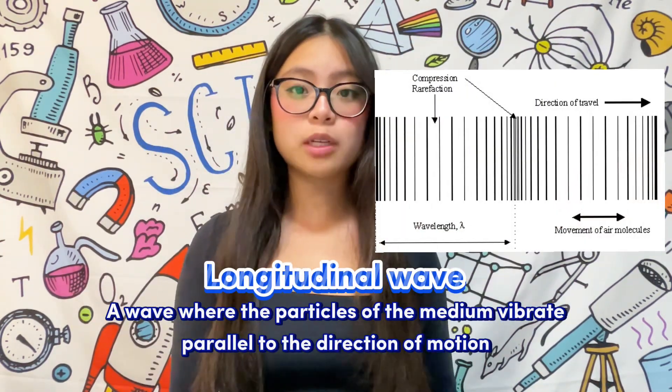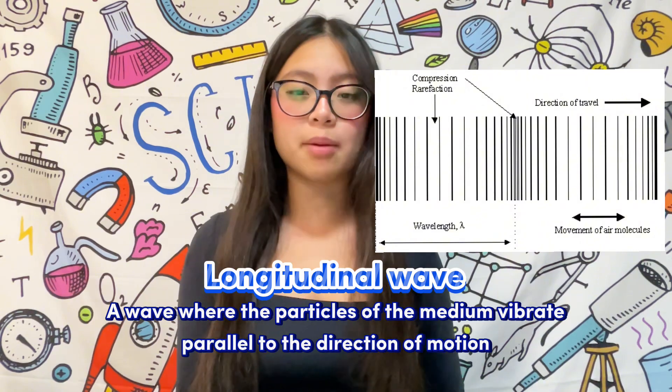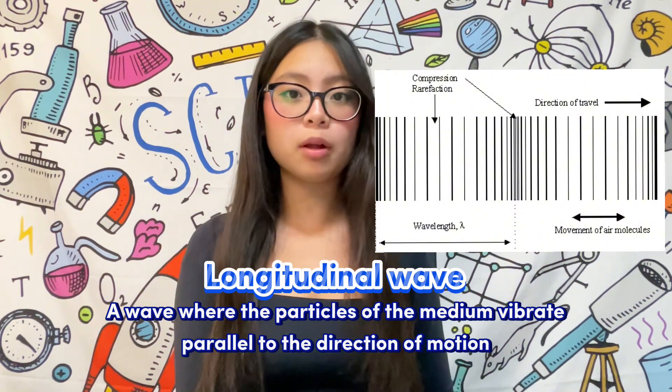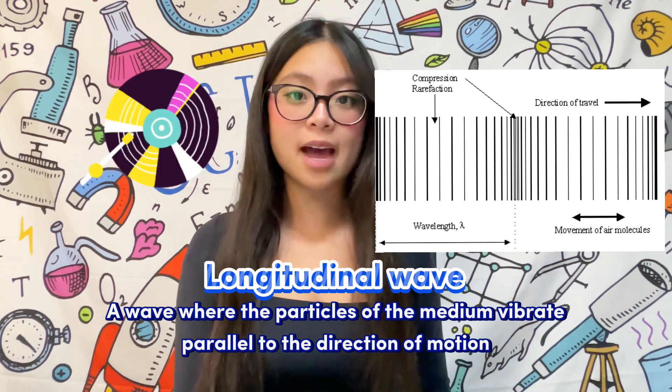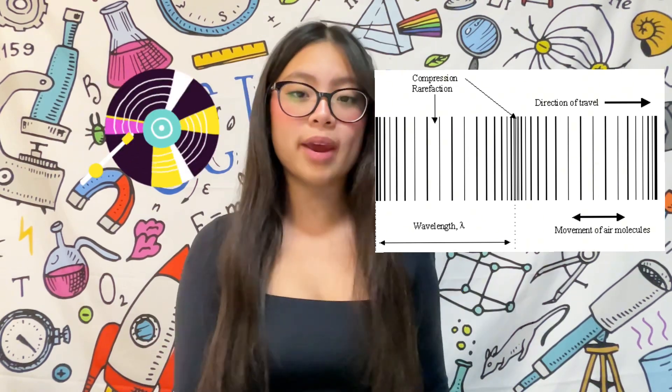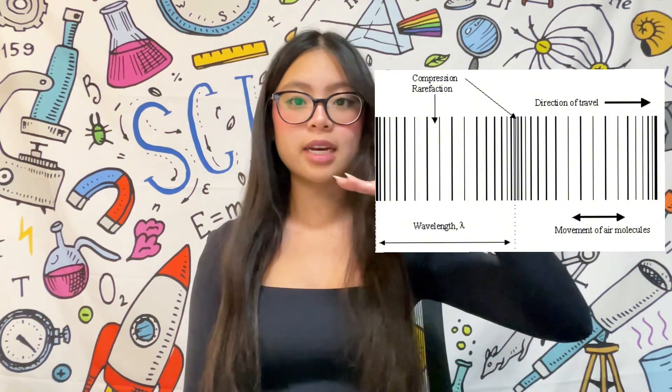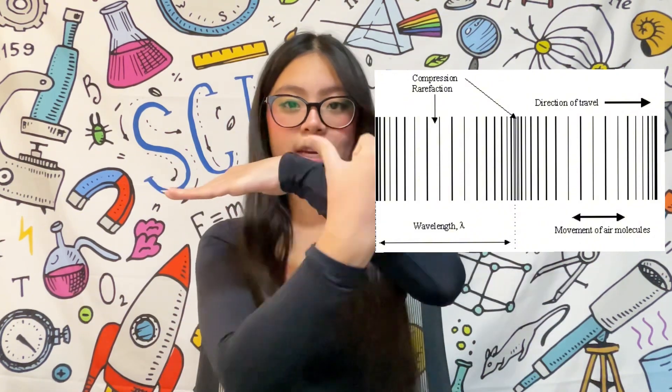A longitudinal wave is a wave where the particles of the medium vibrate parallel to the direction of motion. An example of a longitudinal wave is a sound wave. Longitudinal waves are a little bit harder to imagine, but the direction of motion would be like this, and the particles would be vibrating like this.